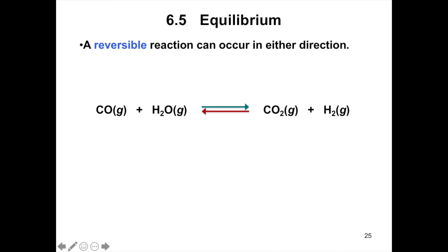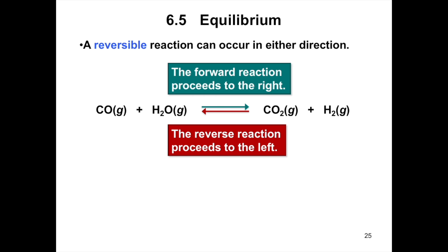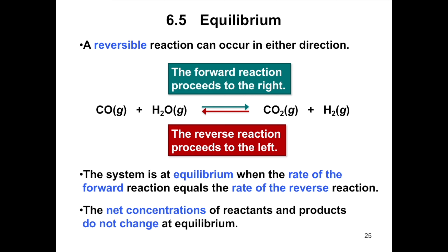When carbon monoxide and water are mixed together, they react to form carbon dioxide and hydrogen by the forward reaction. Once carbon dioxide and hydrogen are formed, they can react together to form carbon monoxide and water by the reverse reaction. The system is at equilibrium when the rate of the forward reaction equals the rate of the reverse reaction, and the net concentrations of reactants and products do not change at equilibrium.